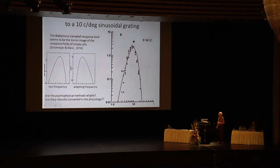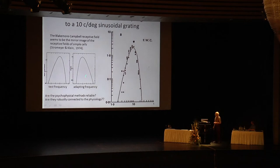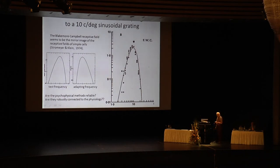Stromer and I pointed out that to connect the adaptation curve to neurons, you actually have to do a right-left reversal. The actual connection to physiology is flipped. So that's controversy number one: how do you connect the Blakemore-Campbell curve to the neurons, and why is it flipped, and what is going on? Can one have a new way of connecting psychophysics to the underlying neural structure?